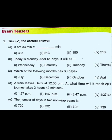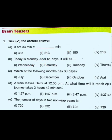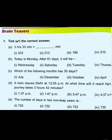Now part B: today is Monday, after 61 days what day will it be? We divide 61 by 7 and get a remainder of 5. We then add five days after Monday. Five days after Monday gives us Saturday. So the answer is Saturday.